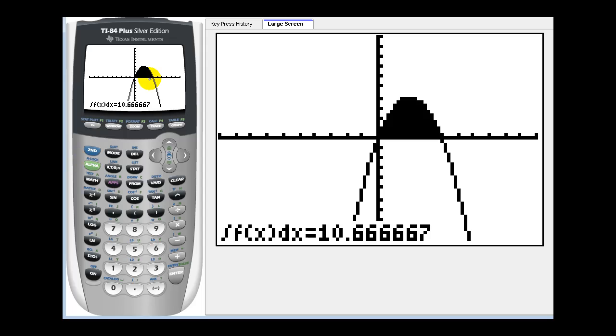And this is kind of a nice way of looking at it because since the function is non-negative from zero to four, we know this definite integral represents the area bounded by the function and the x-axis. And you can see our value of course is the same.